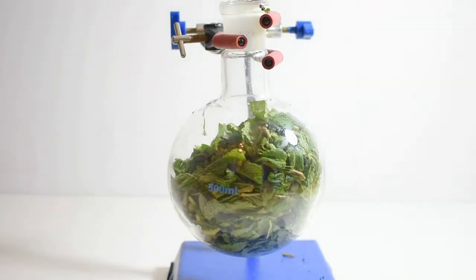Now that the mint leaves are in the flask, I can set up the apparatus for a steam distillation. This kind of distillation uses water vapor to pull the oils out of the mint and over a distillation apparatus so that the mint oils can then be separated.